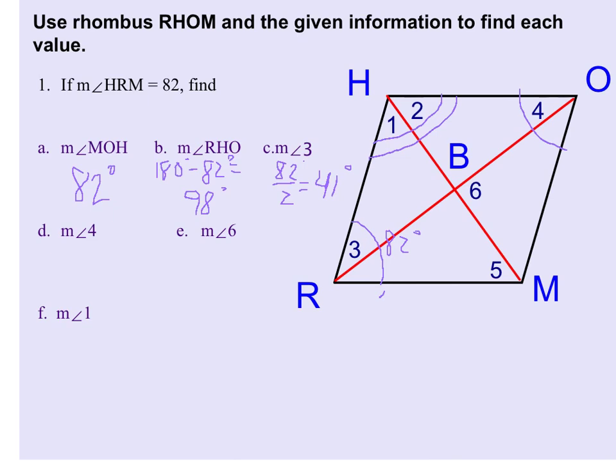The measure of angle 4 has to be equal to the measure of angle 3, because again, angle O is being bisected. And because we know that both of these angles are 82 degrees, the same reasoning applies for angle 4. We would take 82, divide by 2, and we would get 41 degrees.